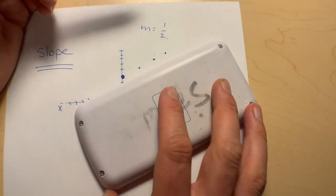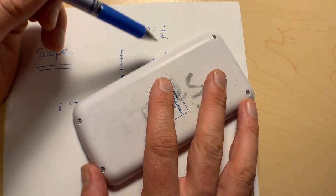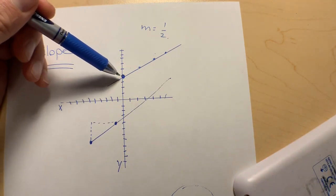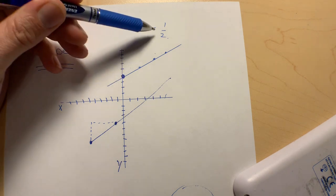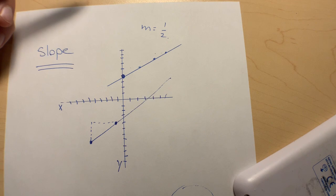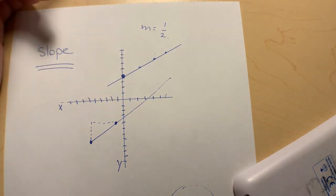So you could see there that if you knew just one point and you knew what slope is, you could just keep counting slope over and over again to create as many points as you want on this line.